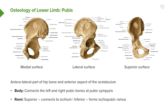The pubis has two rami: a superior ramus, which passes towards the ischium, and an inferior ramus, which passes to the ischium as the ischiopubic ramus. We can see the superior pubic ramus running in this direction and the inferior pubic ramus running in this direction.